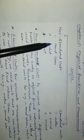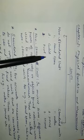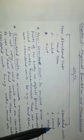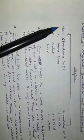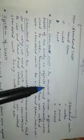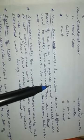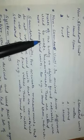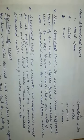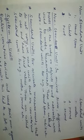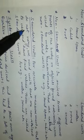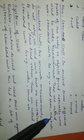In Non-Standard Units, what are the examples? Handspin, Cubit, and Foot. In Standard Units, what are the examples? Meter, Pound, and Seconds. Non-Standard Units are those in which, in ancient times, different parts of the body or objects formed naturally were used to make measurements. These are called Non-Standard Units — for example, Handspin and Cubit.